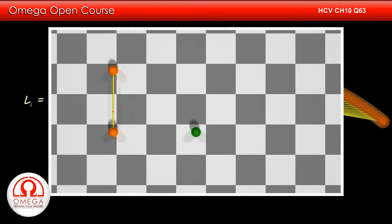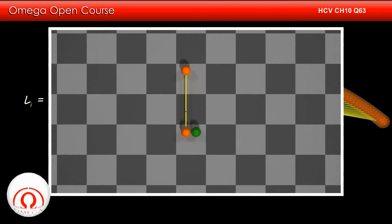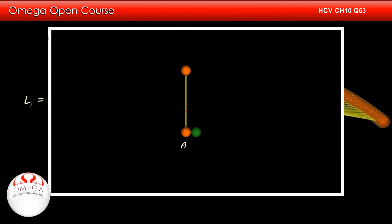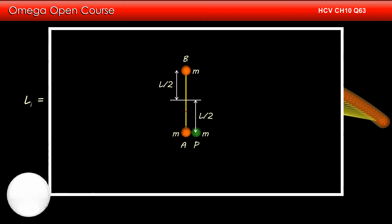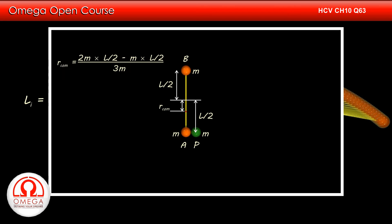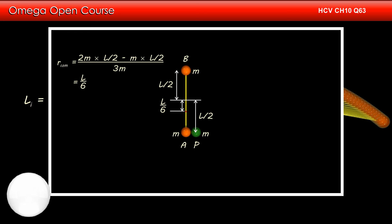After the collision, the particle sticks to the ball, so the mass at this end of the rod is 2M. Therefore, the position of the center of mass of the ball-plus-particle system is (2M × L/2 − M × L/2) divided by 3M. Simplifying, we get L/6. Thus the center of mass of the system is a distance of L/6 from the center of the rod.